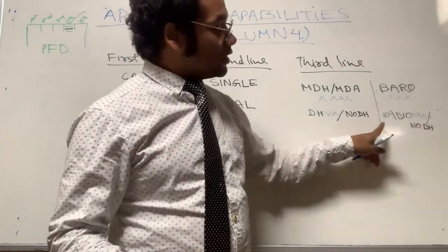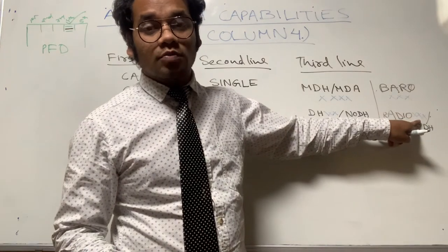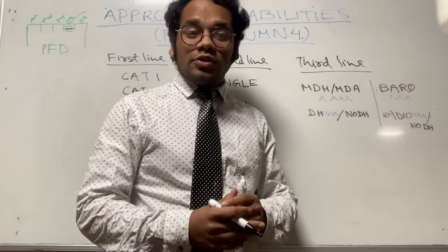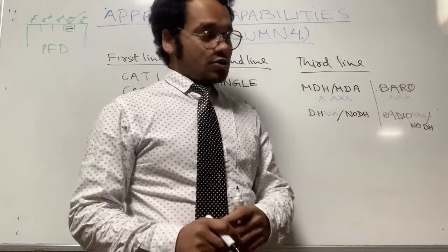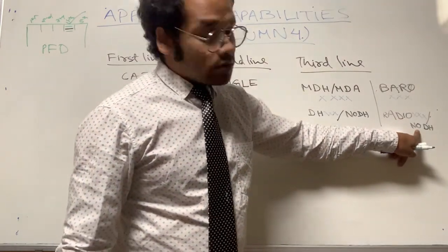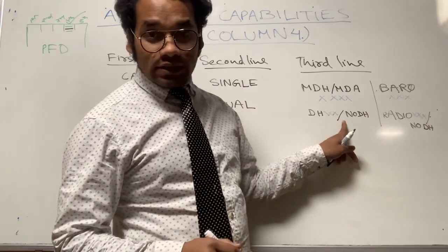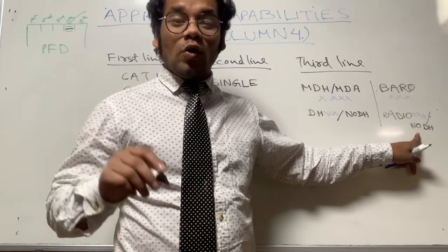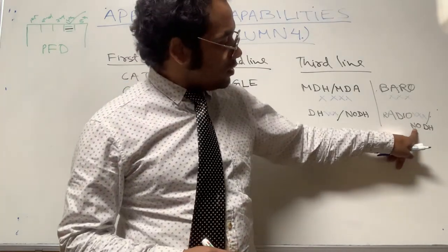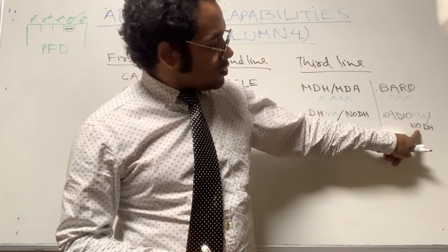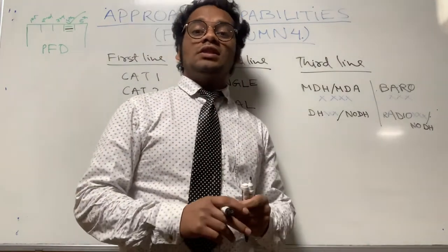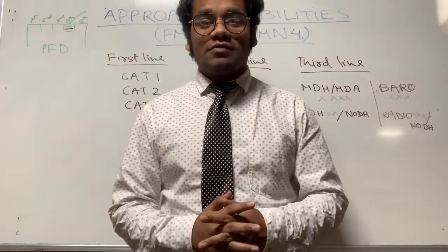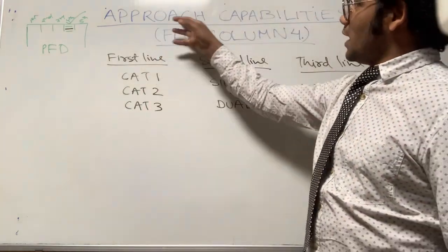In some MSN numbers of the A320, you may get RADIO XXXX or NO DH. RADIO appears in white color, XXXX — the numbers — appear in blue color, and NO DH is the same as before. These numbers shown in blue are the ones entered by the flight crew on the MCDU performance approach page. If the flight crew enters the word NO, then NO DH will appear on the third line of the fourth column on the PFD.